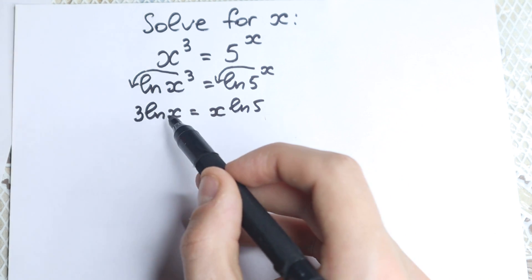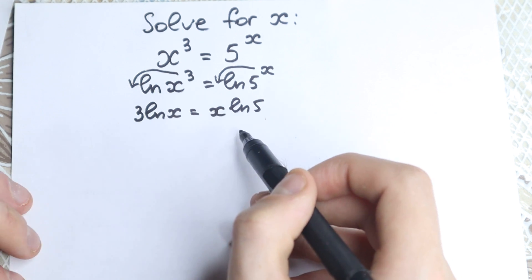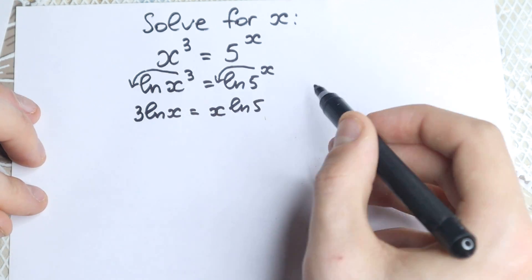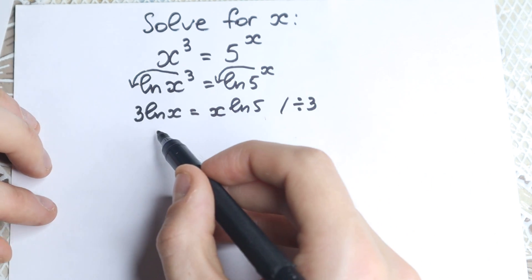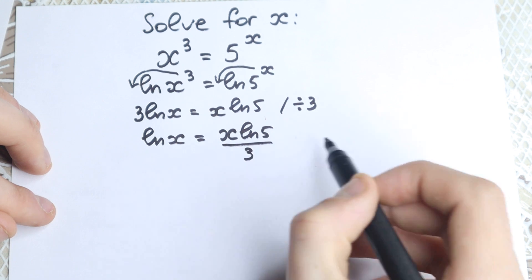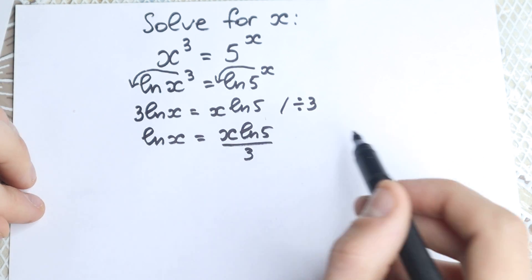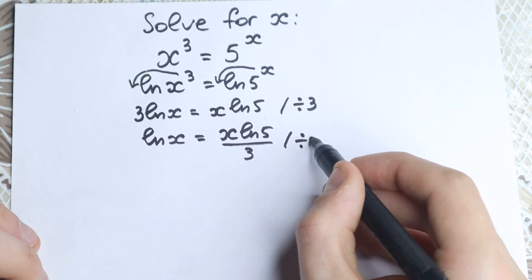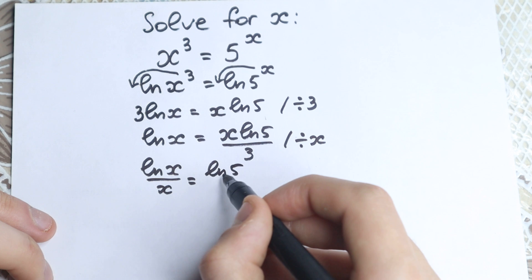Now let's look at this expression: 3·ln(x) — here 3 is a constant and x is a variable. And x·ln(5) — x is a variable and ln(5) is a constant. Let's group our constants on one side and variables on the other. Let's divide both sides by 3, which cancels the 3 on the left-hand side. So we have ln(x) equal to x·ln(5)/3. Then let's divide both sides by x, giving us ln(x)/x equal to ln(5)/3.